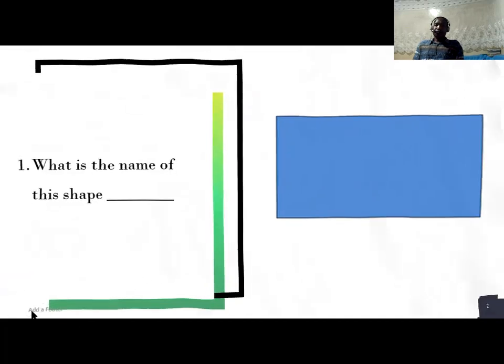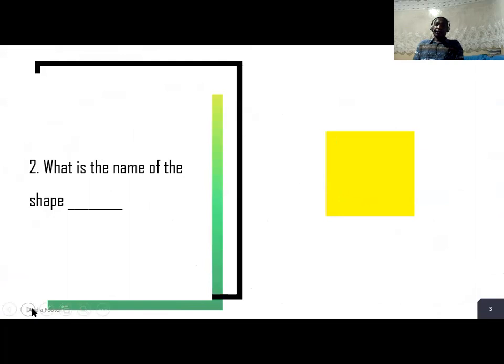Number two, what is the name of the shape? The shape in yellow. How do you call that shape? You write this name.